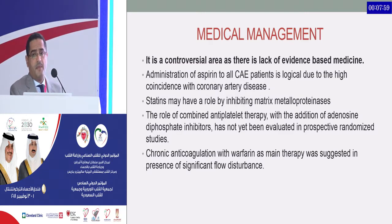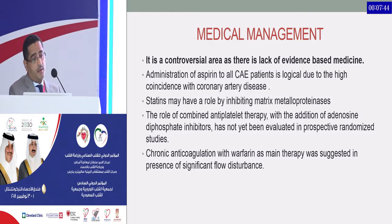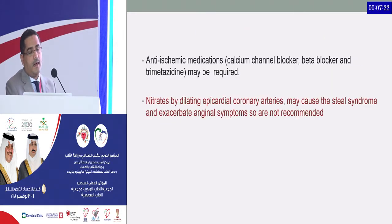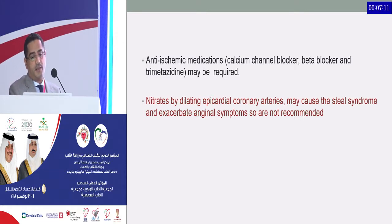Medical therapy for coronary ectasia is controversial because there is no evidence-based medicine until now. Aspirin is logical for all ectasia patients given its high coincidence with coronary artery disease. Statins may have a role by inhibiting matrix metalloproteinases. Combined antiplatelet therapy with ADP inhibitors has not been evaluated in prospective randomized studies. Chronic anticoagulation with warfarin was suggested in the presence of significant flow disturbance. Beta-blockers and trimetazidine may be required, but nitrates can dilate epicardial arteries, may cause steal phenomenon and exaggerate angina symptoms, so are not recommended.